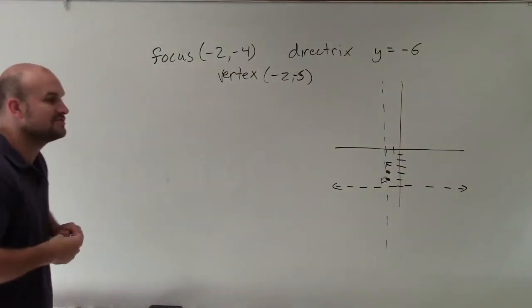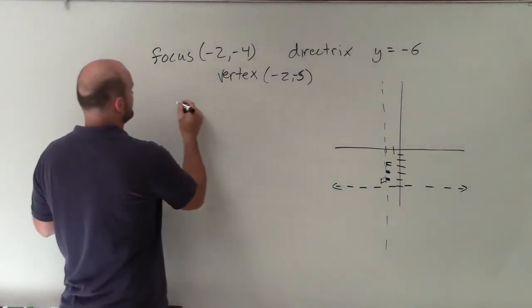So therefore, we can see that my axis of symmetry is vertical. Therefore, my equation is going to look like this.